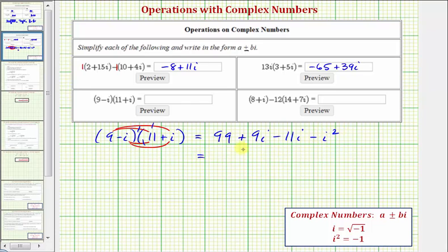Now we want to simplify. We have 99. And then we have 9i minus 11i. That's negative 2i or minus 2i. And then we can't leave i squared here. Remember i squared equals negative one. So be careful here. We'd have minus and then negative one, which would become plus one. 99 plus 1 equals 100. So we have 100 minus 2i.